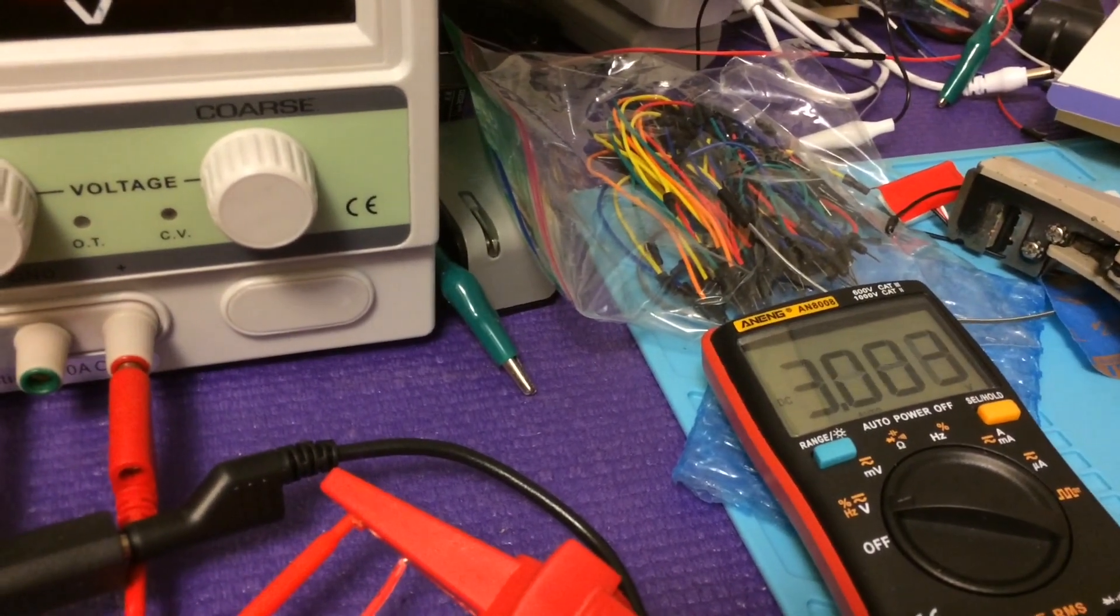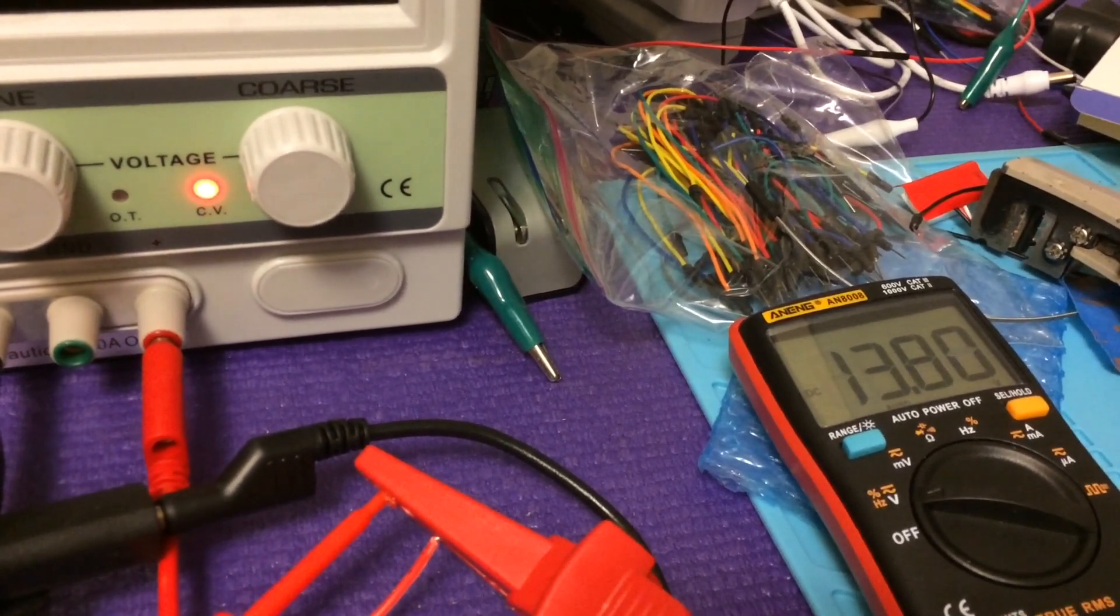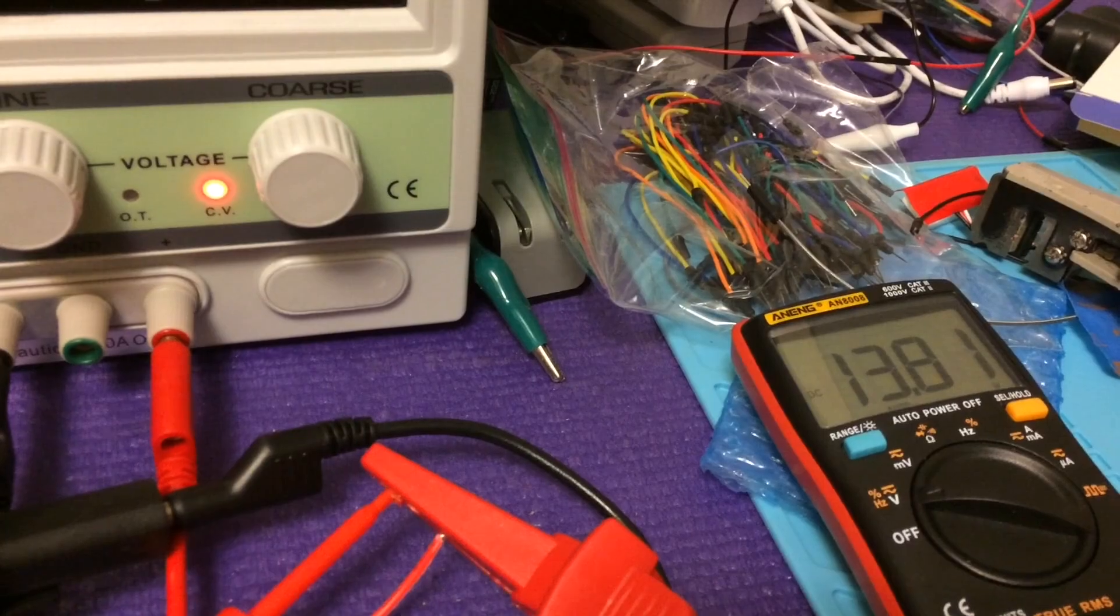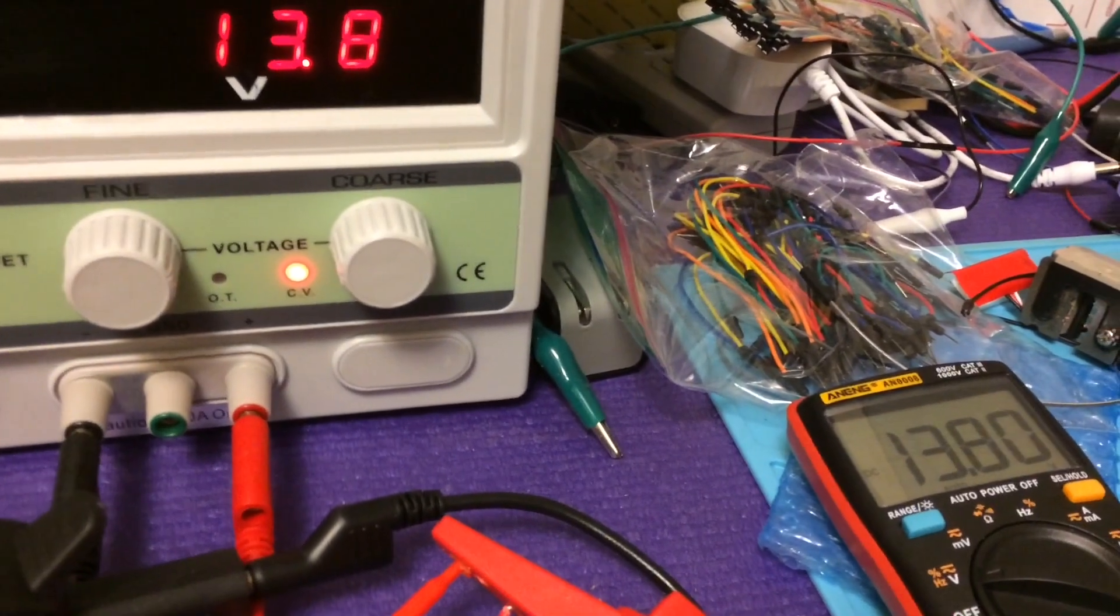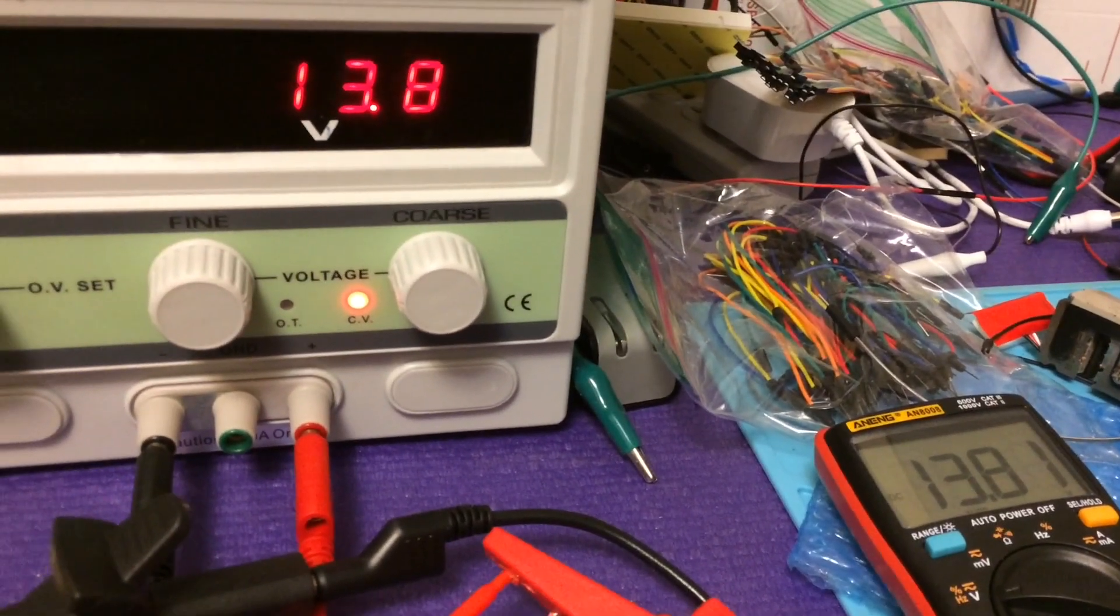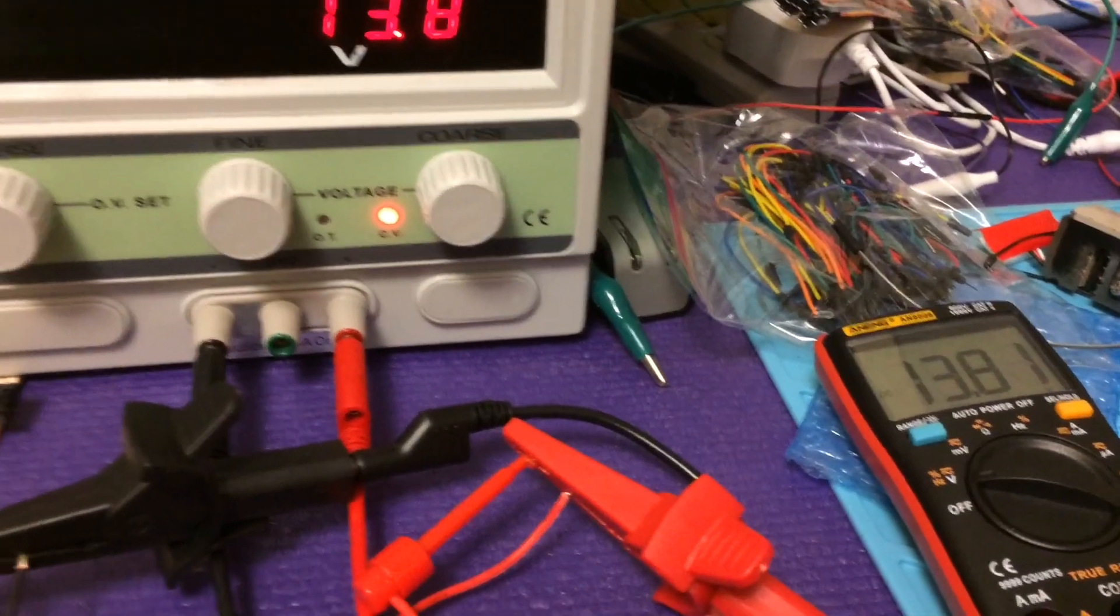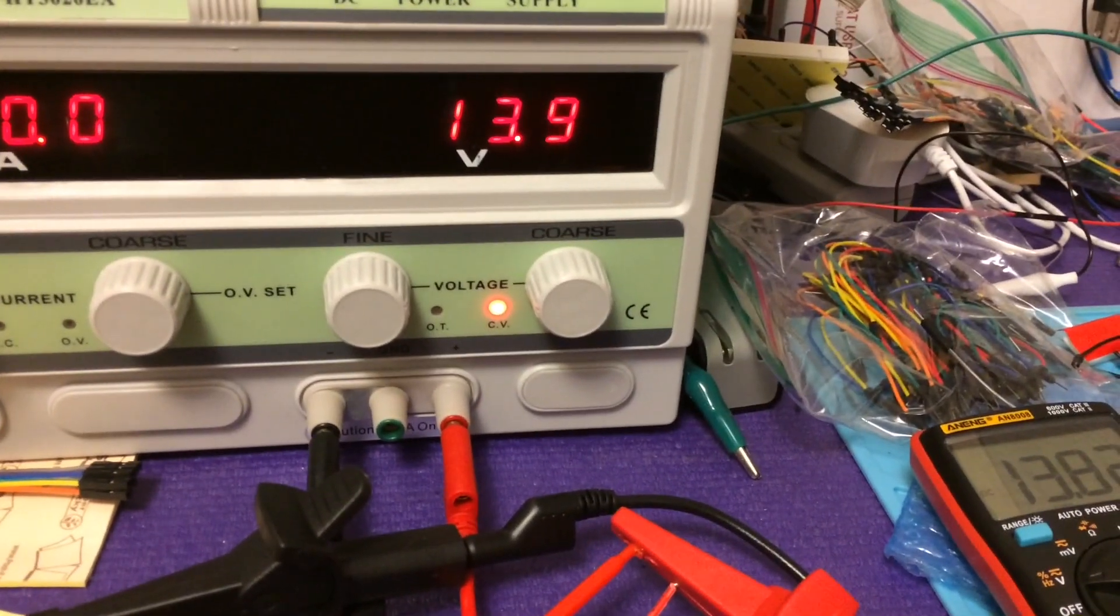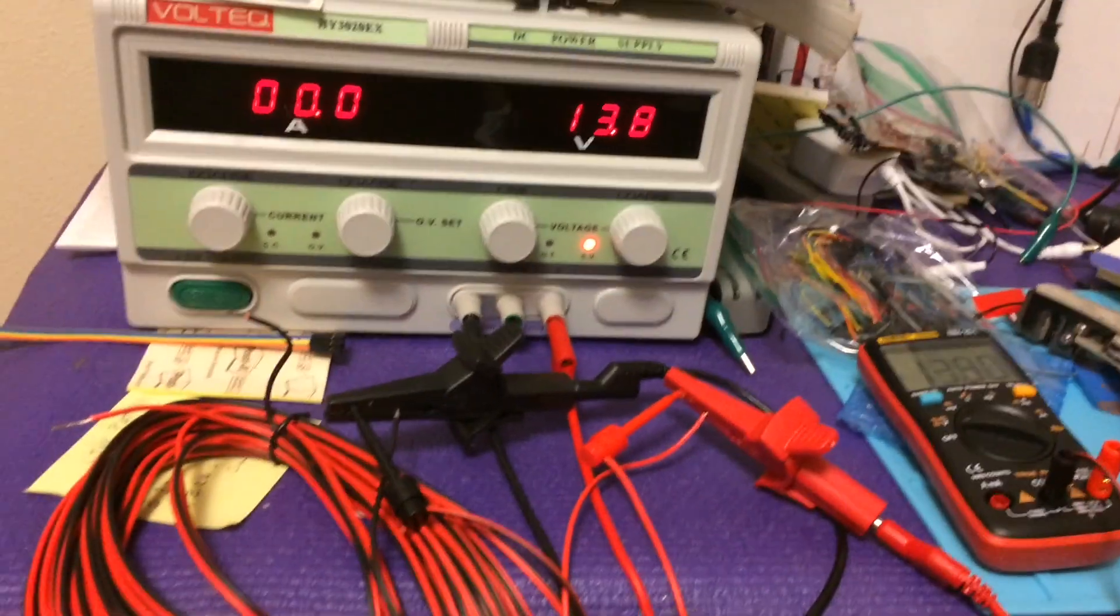So I'm just turning the current up just enough to where I get 13.8, 13.81 volts. That's how I'm set up, and so now I'm going to read the voltage at the end and see what the voltage drop is, same voltmeter and everything, and see if we can't explain what we're seeing.